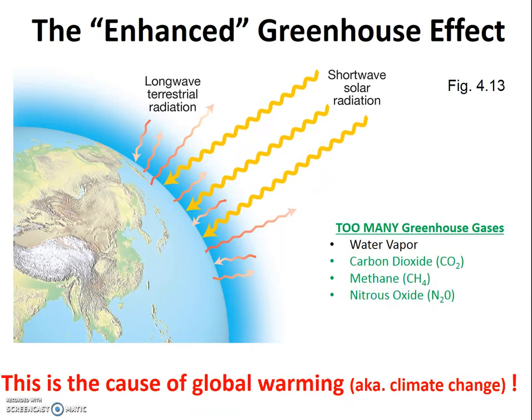As we just noted, the greenhouse effect is a natural process. However, the problem is that humans are adding extra greenhouse gases into the atmosphere, which result in more heat retention and rising tropospheric temperatures. Sometimes this process is referred to as the enhanced greenhouse effect, because it is essentially extra warming caused by the addition of anthropogenic greenhouse gases. The addition of these extra anthropogenic greenhouse gases is the cause of global warming.